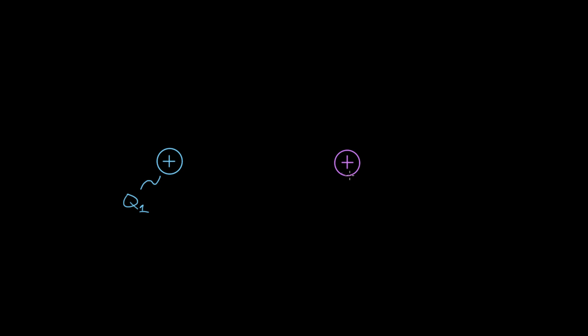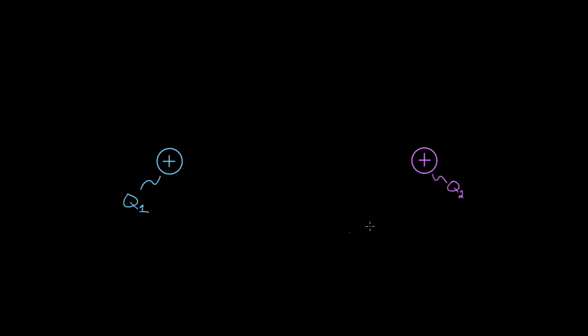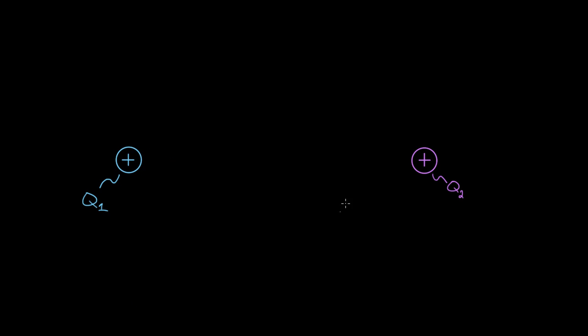Here's something that used to confuse me. If you had two charges — we'll keep these straight by giving them a name — we'll call this one Q1 and this one Q2. If you've got these two charges sitting next to each other and you let go of them, they're gonna fly apart because they repel each other; like charges repel. So Q2 gets pushed to the right and Q1 gets pushed to the left. They're gonna start gaining kinetic energy, speeding up. But if these charges are gaining kinetic energy, where is that energy coming from?